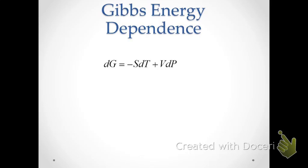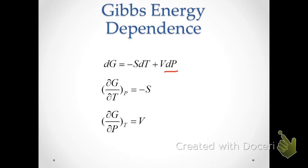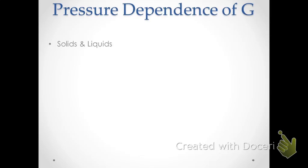We'll first go back to the fundamental equation we derived in a previous video, which shows the temperature and pressure dependence of the Gibbs energy. The temperature dependence is expressed by the first term, negative SdT. The pressure dependence is indicated in the second term. That means the temperature dependence partial derivative is simply equal to negative S, and the pressure dependence partial derivative is equal to V.